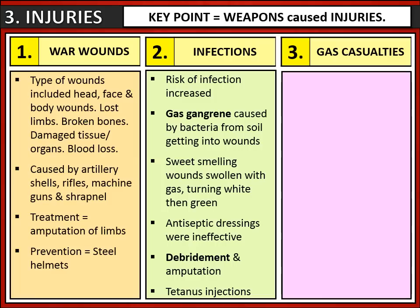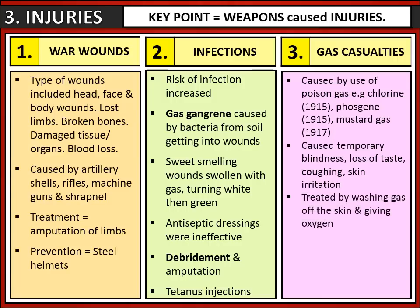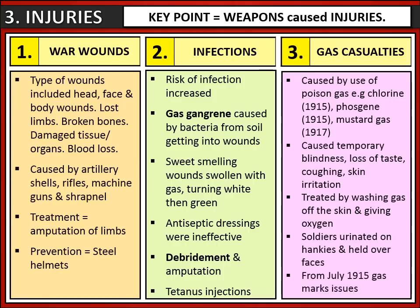Another key injury that soldiers received was as a result of the use of poison gas, such as chlorine, phosphine or mustard gas. They caused all sorts of problems like temporary blindness, skin irritation and even coughing, and often they were treated by washing the gas off the skin or giving a soldier oxygen. Soldiers did not have any protection against gas in 1915 when it first occurred, and so many resorted to urinating on their hankies and holding it over their faces. But from July 1915, the army realised they needed to give more protection and gas masks were issued.